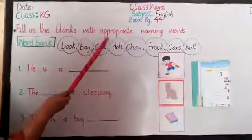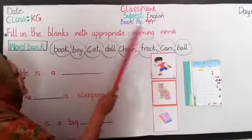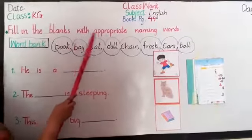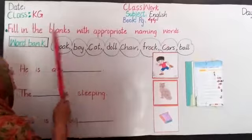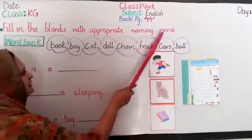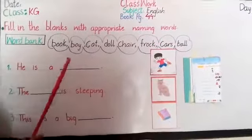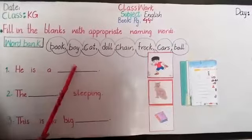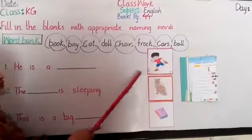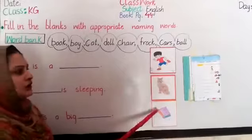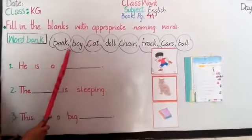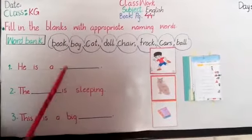Fill in the blanks with appropriate naming words. Ji, bita, aap ne in pictures ko dhekhkar in blanks ko appropriate. Yaani ka jo inka sahih naam hooga. Unko aapne yaha se dhekh, choose karna hai. Aur pir yaha pa rite karna hai.